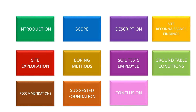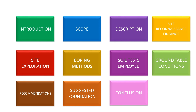Section seven covers laboratory tests and their outcomes — elaborating on lab tests conducted on soil samples obtained during exploration and the results crucial for assessing soil properties. Section eight is the ground table information and location. Section nine is recommendations for potential improvements — if the site is very poor in strength and unstable, certain enhancements may be needed to facilitate future construction. Section ten is the suggested foundation type and structural aspects — based on the study of soil capability, a foundation that is appropriate for the construction is suggested.